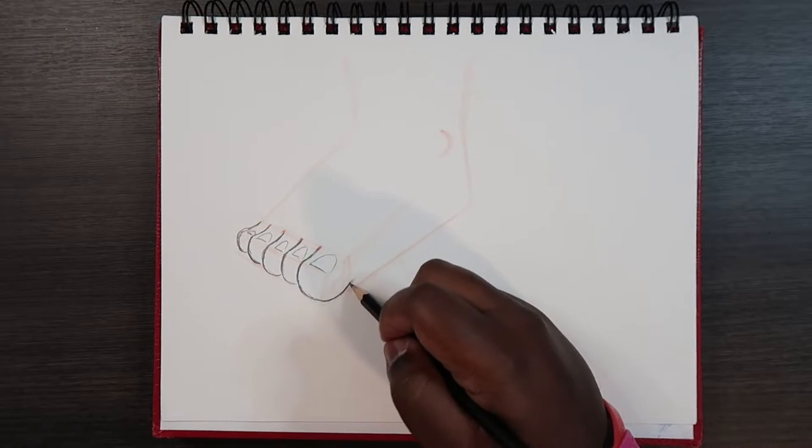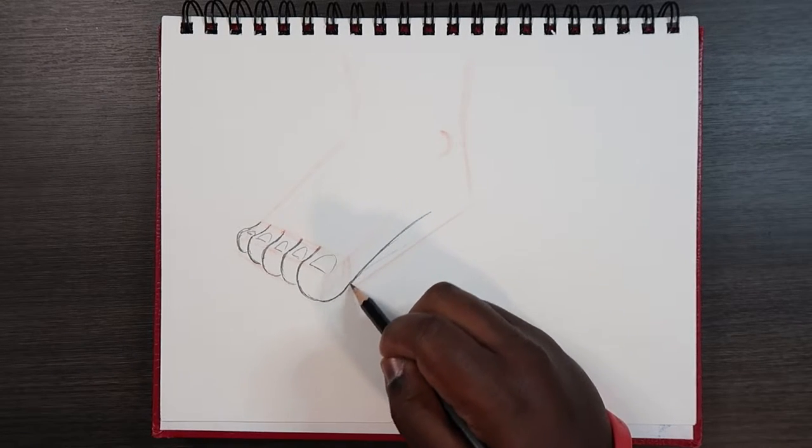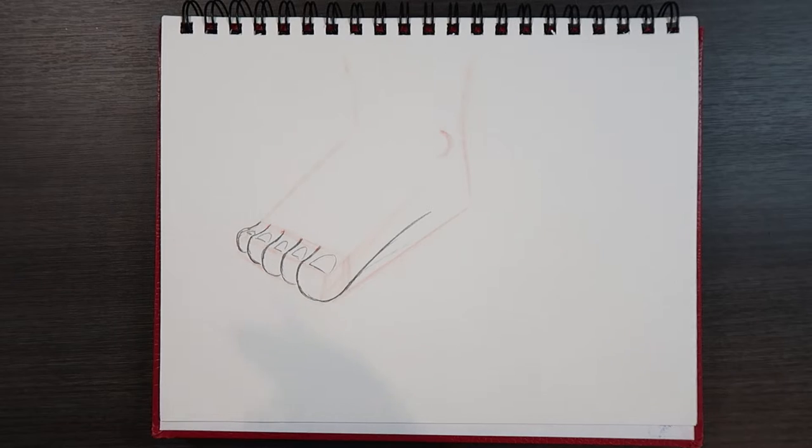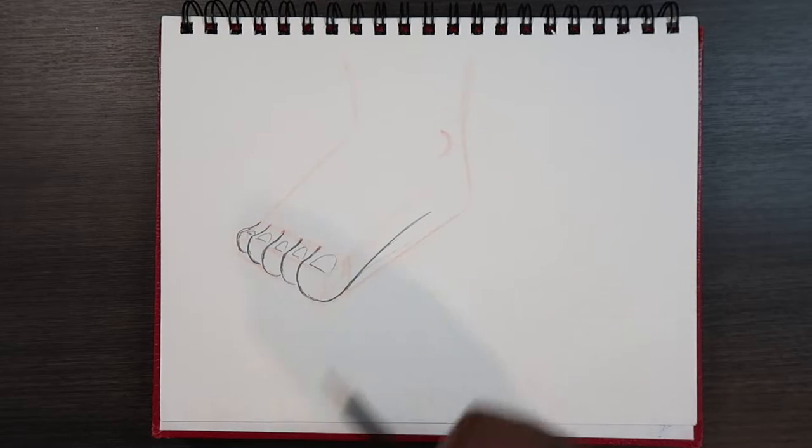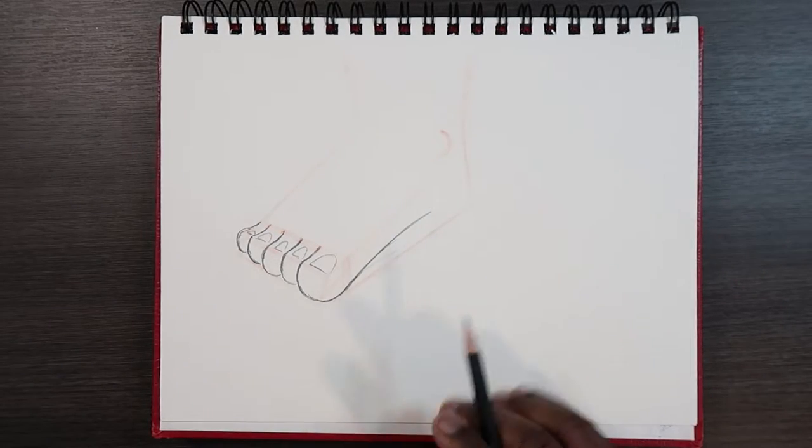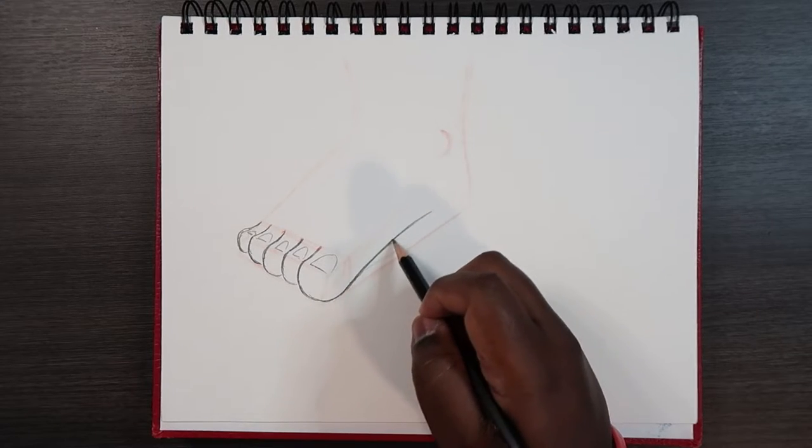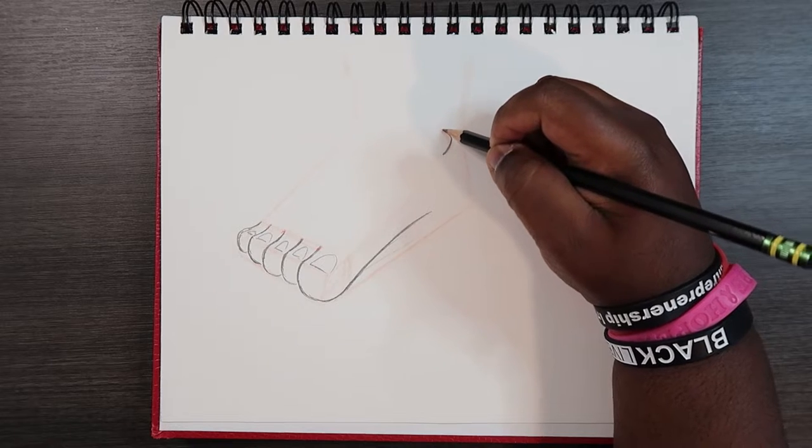Coming off of this big toe, we're actually gonna make a line coming up as if this foot is in a high heel shoe, something like that, but probably not all the way up high - sort of an incline like this. That was probably a bad example, but in other words, do this. And then you see where we drew this ankle here? I'm actually gonna draw that in.